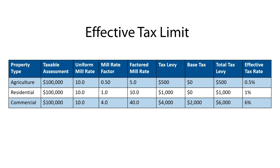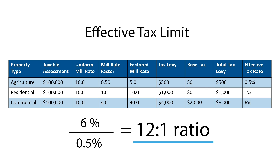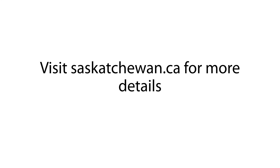An effective tax limit sets the maximum ratio between the highest effective tax rate and the lowest effective tax rate after all tax tools have been applied. In our sample calculation, the lowest tax rate is 0.5% and the highest tax rate is 6%. The effective tax rate ratio is 6% divided by 0.5%, which is 12 to 1, and differs from the 8 to 1 ratio we earlier determined using the mill rate factor limit. More information on municipal property tax tools can be found online at saskatchewan.ca.